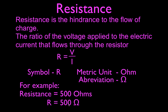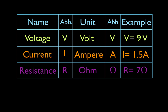To sum everything up: voltage has the symbol V, the unit is the volt, abbreviation V — for example, voltage equals 9 volts. Current has the symbol I, the unit is the ampere, abbreviation A — for example, the current is equal to 1.5 amps. Resistance has the symbol R, the unit is the Ohm, abbreviation Omega — and we would read that as the resistance is equal to 7 Ohms.